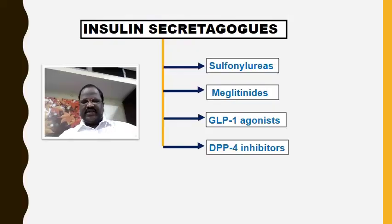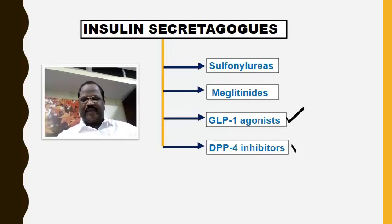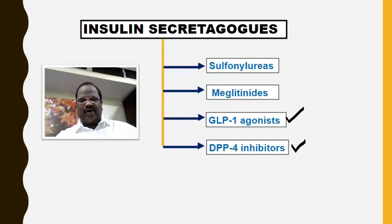After finishing sulfonylureas and meglitinides, the other two important groups of insulin secretagogues are GLP-1 agonists and DPP-4 inhibitors. In this video, we are going to cover GLP-1 analogs and DPP-4 inhibitors.